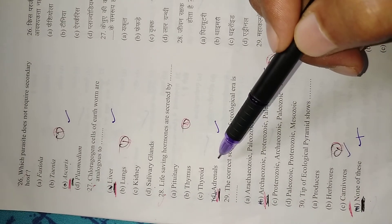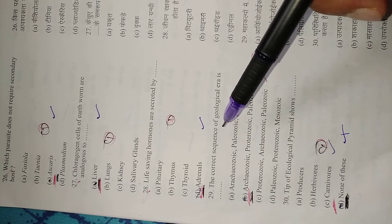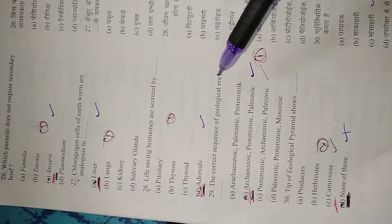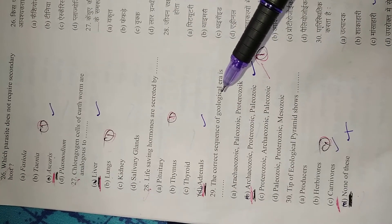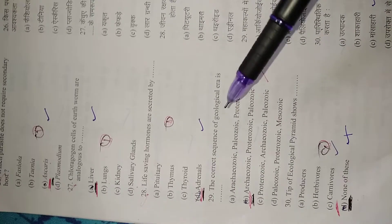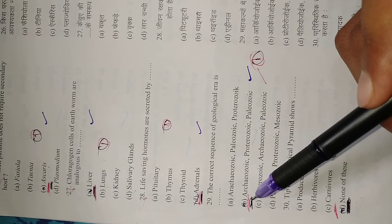Question 29: The correct sequence of geological eras is Archaeozoic, Proterozoic, Paleozoic, and Cenozoic. Right option is B.